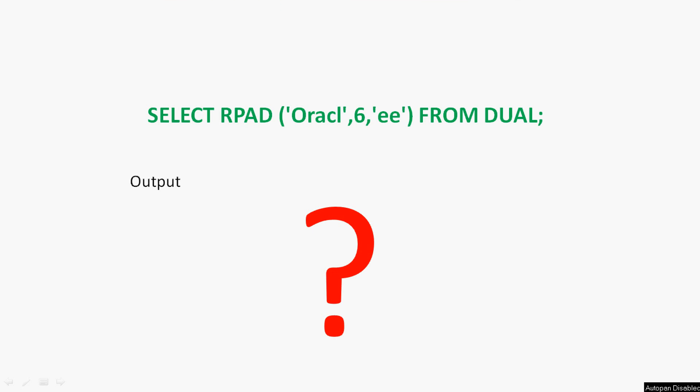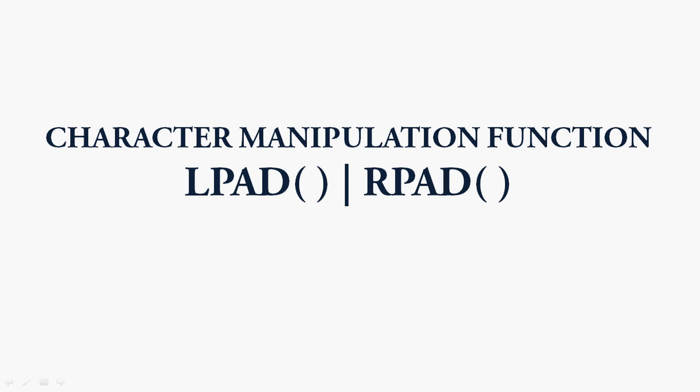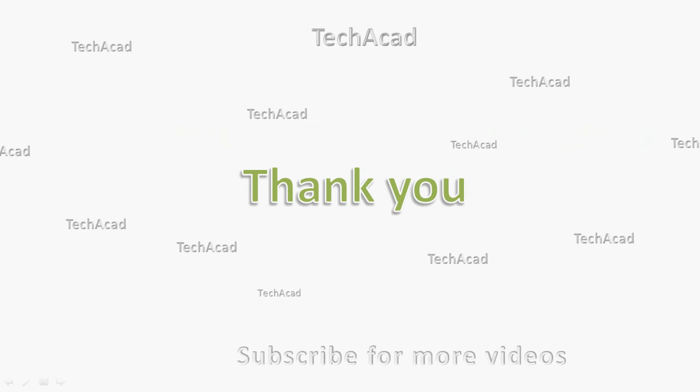Coming to the question of the day: SELECT RPAD('ORACL', 6, 'EE') FROM DUAL — what is the output for this query? Please write your answer in the comment section. So in this video we have seen character manipulation functions LPAD and RPAD. Dear friends, if you have any doubts or suggestions please comment below, and we will meet again with the next video. Thank you.